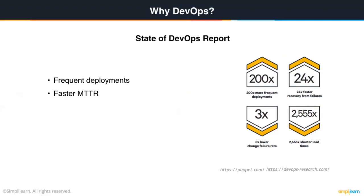Then we have a faster MTTR — Mean Time to Recovery. If there's a failed deployment, MTTR measures how long it takes to get your application back up and running. For DevOps projects, it is 24 times faster compared to non-DevOps projects. Additionally, there are very fewer failed deployments on a DevOps framework, and much shorter lead times. Lead time indicates the time given to the deployment team to get ready for deployments — it gets reduced from weeks to days, and from days to hours.